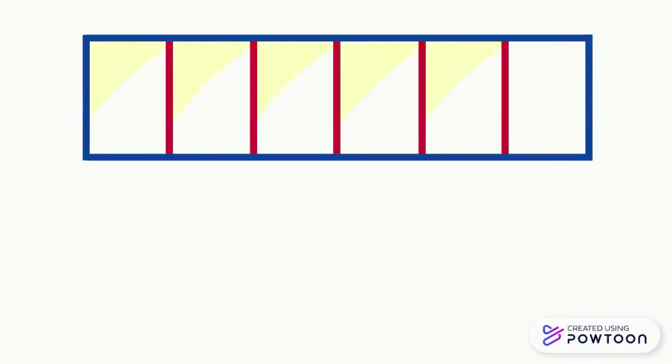Here the fraction of the colored part is 5 over 6, which is called five sixths. If we have colored all the parts of this rectangle, we will obtain six sixths, which is equal to 1, since we have colored the whole rectangle.